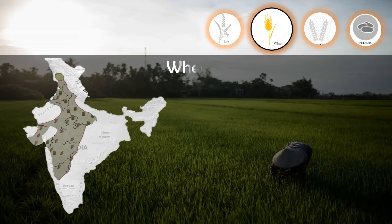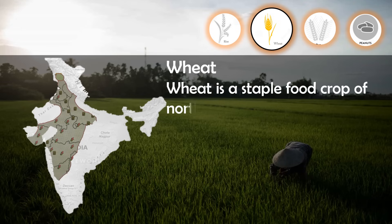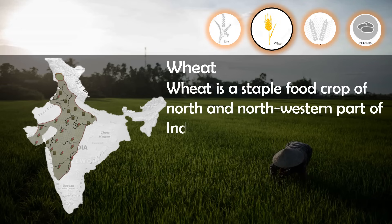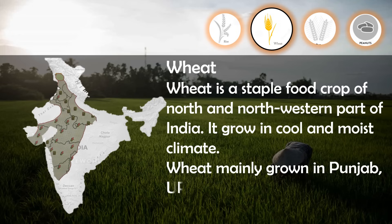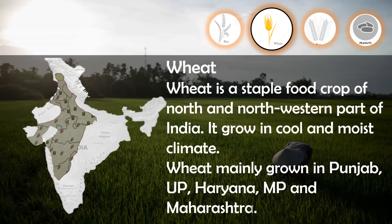Wheat is a staple food crop of the north and northwestern part of India. It grows in a cool and moist climate. Wheat is mainly grown in Punjab, Uttar Pradesh, Haryana, Madhya Pradesh, and Maharashtra.